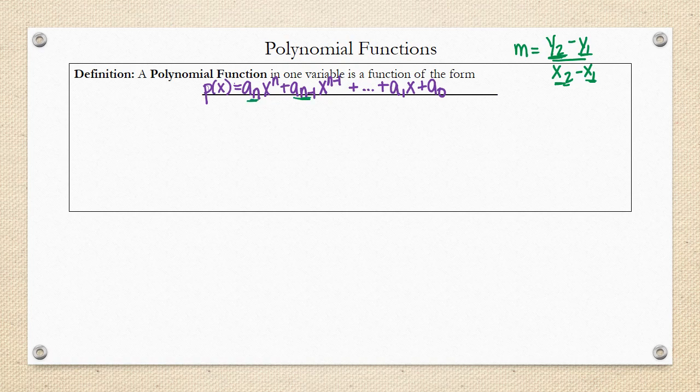It's the same kind of idea for why we call this a sub n and this a sub n minus 1. It's just to show that these are just the coefficients that are in front of the variable x, so that these coefficients aren't necessarily the exact same.